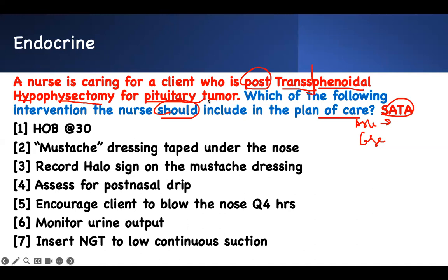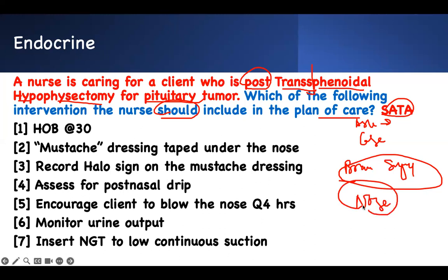Rewrite post-trans-sphenoidal hypophysectomy for pituitary tumor and just tell yourself: brain surgery. It's a bunch of words but it's brain surgery. You have to know they went through the nose — the nose was the access point. The surgery is done through the nose to get to the base of the brain and remove the pituitary tumor.